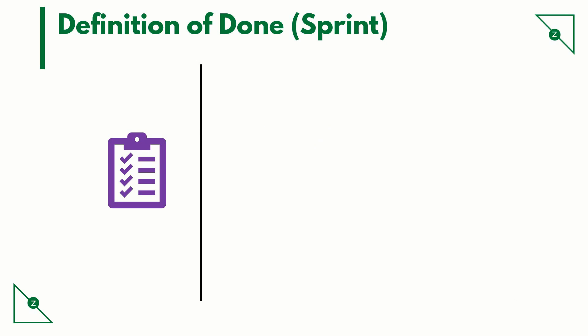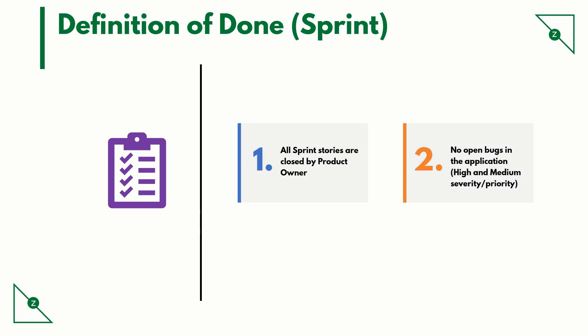Here are some example pointers for definition of done for a sprint. All sprint stories are closed by the product owner — that is, after verifying whether the functionality has been achieved. No open bugs in the application; this would be zero ideally when the QA passes on the story to the product owner.